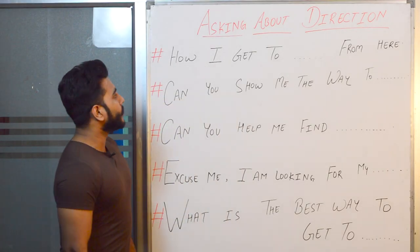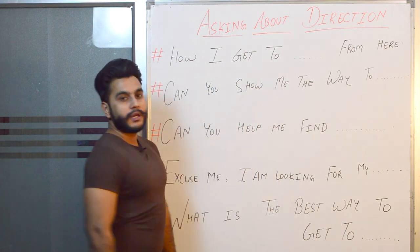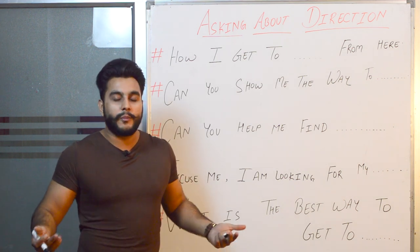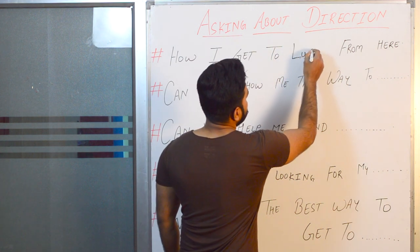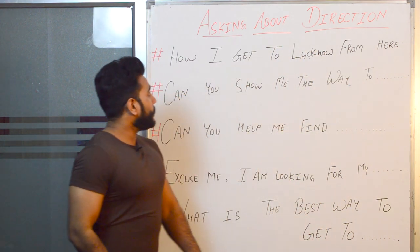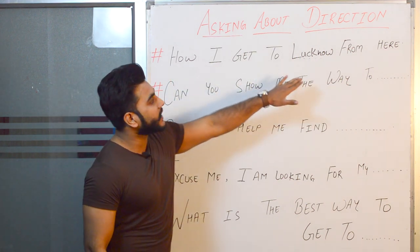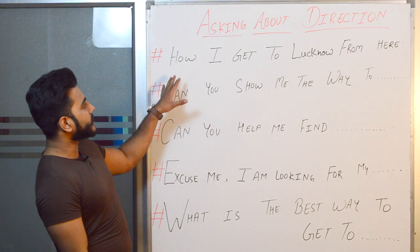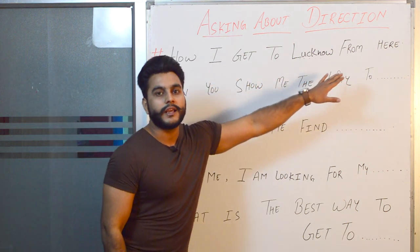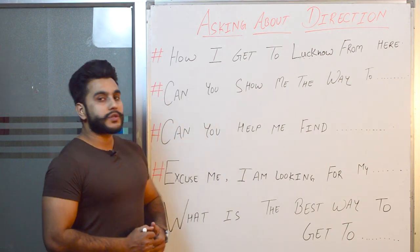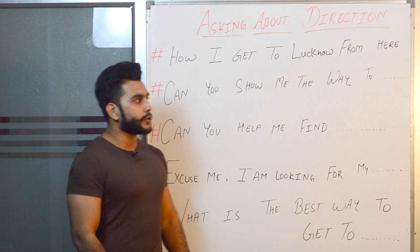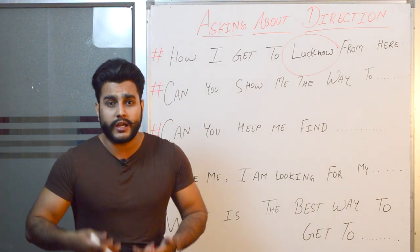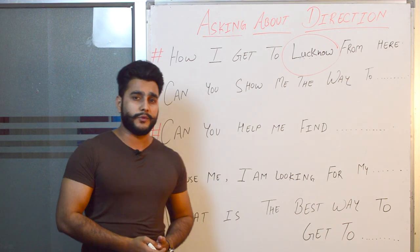The first sentence is: How I get to [place]? For example, if I am from Lucknow, I would say: How I get to Lucknow from here? Let's suppose you are moving to a new city — you can ask someone for directions using this sentence. You can replace Lucknow with any other city you want to ask about.